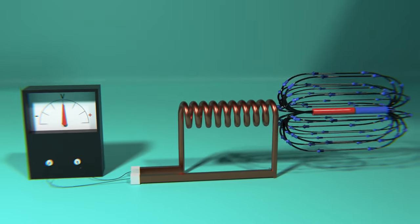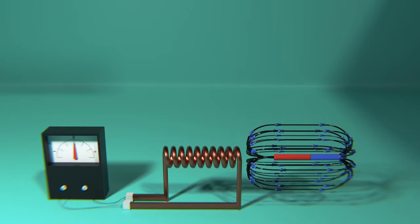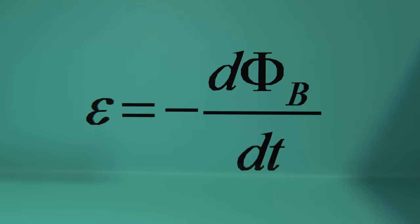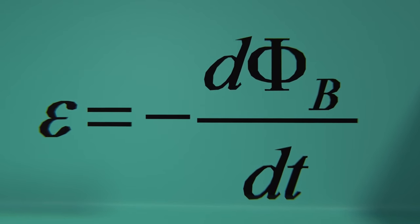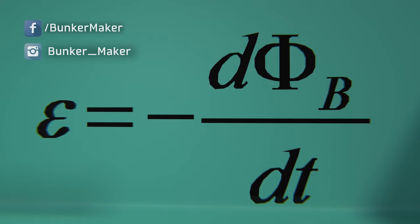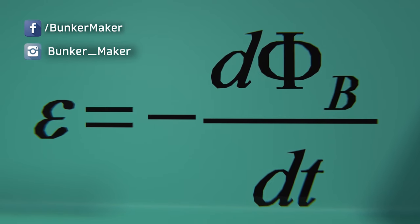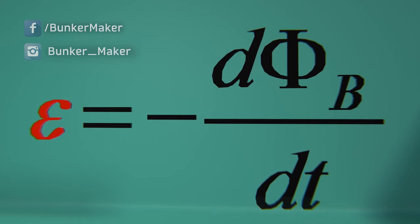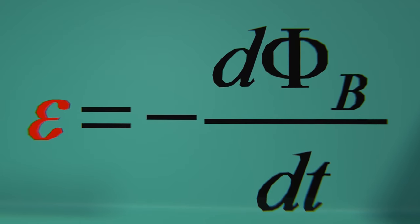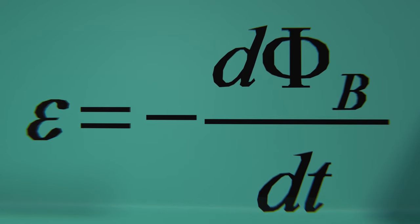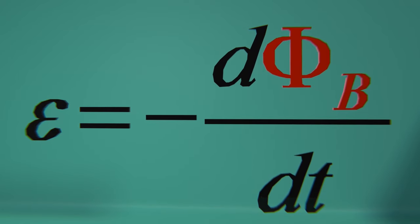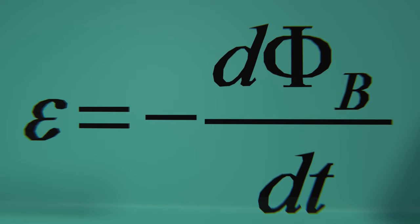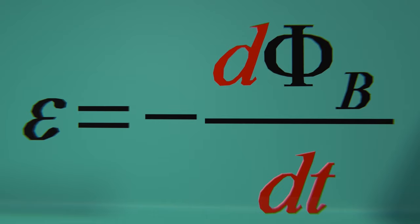With his experiments, Michael Faraday ended up defining the law of induction, which tells us that the electromotive force generated is equal to the derivative of the magnetic flux with respect to time. In simple words: the electromotive force is equivalent to the voltage generated in the circuit; the magnetic flux refers to the direction and force of the magnetic field; and the derivative with respect to time simply means a variation over time.